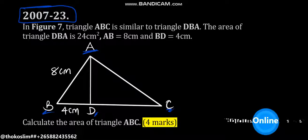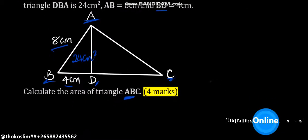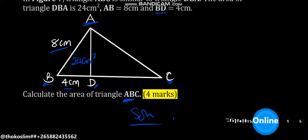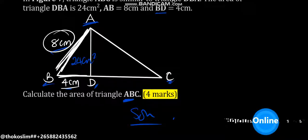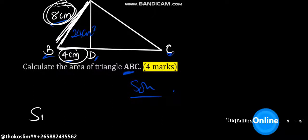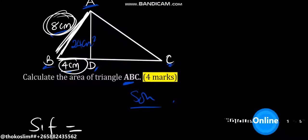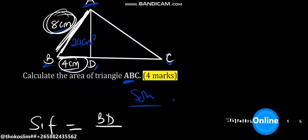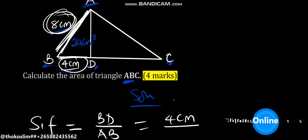The area of triangle DBA is 24 cm squared, AB is 8 cm, and BD is 4 cm. Now for the solution: the scale factor is equal to BD over AB, which is 4 cm over 8 cm.